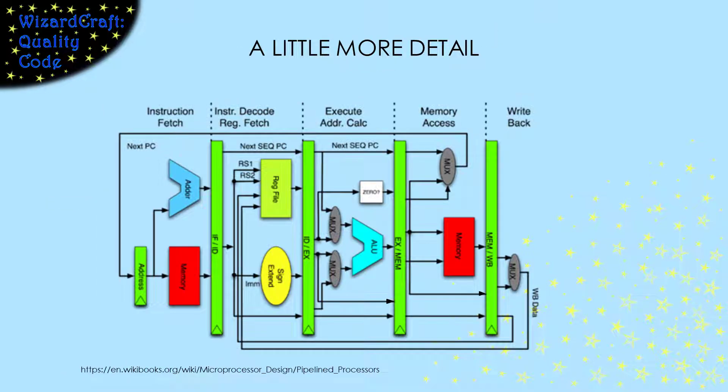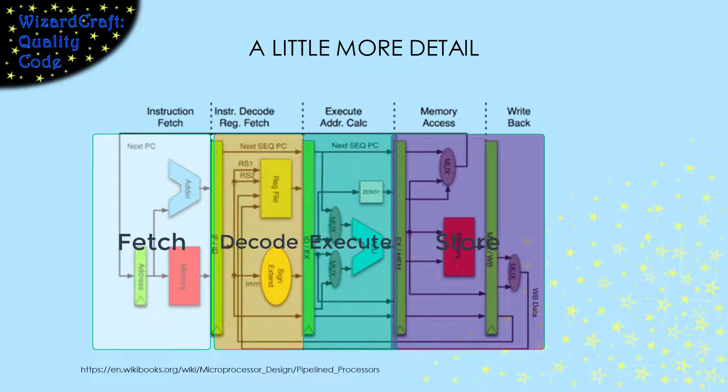This diagram shows the CPU structure that maps to the Fetch, Decode, Execute cycle in more detail. The boxes in this diagram are the functional parts of the CPU, and the arrows show how data flows between them. At the highest level, you can see the Fetch, Decode, Execute, and Store parts of the cycle in this picture.